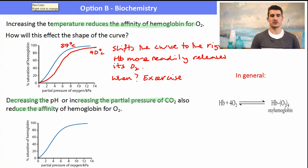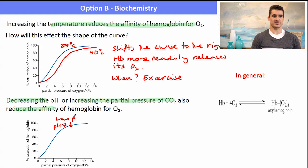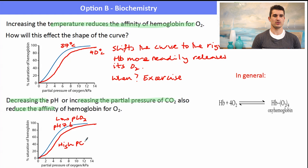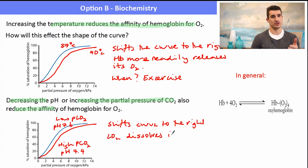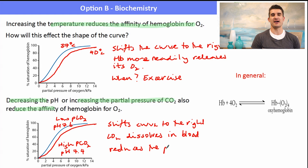Decreasing pH or increasing the partial pressure of CO₂ also reduces hemoglobin's affinity for O₂ — this is the Bohr effect. Normal blood pH is about 7.4 at low pCO₂. A lower pH combined with high CO₂ partial pressure shifts the dissociation curve to the right, meaning hemoglobin releases O₂ more readily. This is because CO₂ dissolves in the blood, lowering pH and reducing hemoglobin's affinity for oxygen.